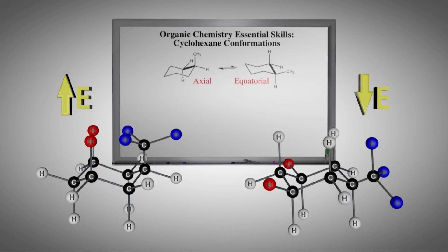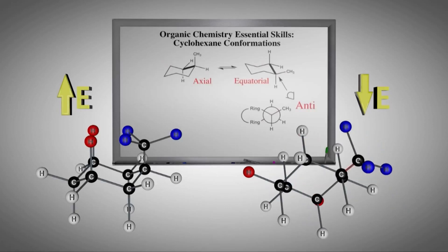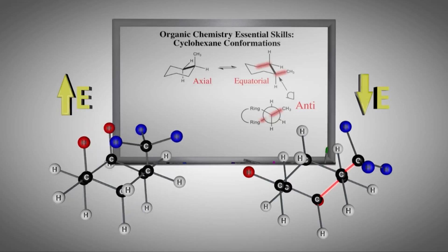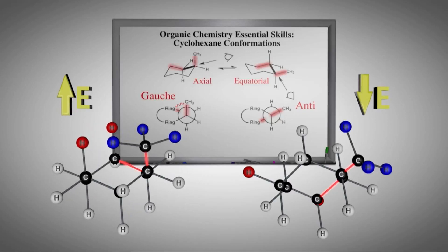In addition, when we examine the Newman projections for each conformer, we see that the methyl group is anti to one of the ring carbons when the methyl group is equatorial. However, when the methyl group is in the axial conformation, one of the ring carbons is gauche, which is higher in energy than the anti-conformer.